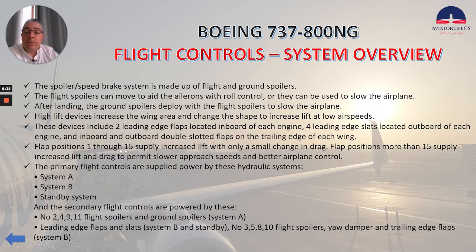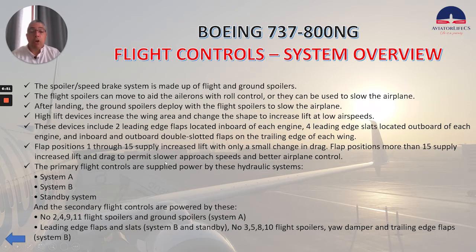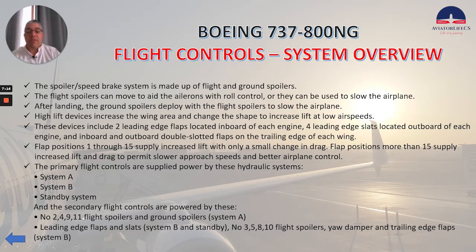Flap positions 1 through 15 supply increased lift with only a small change in drag. Flap positions more than 15 supply increased lift and drag to permit slower approach speeds and better airplane control. The primary flight controls are powered by system A, system B, and the standby system. The secondary flight controls: flight spoilers 2, 4, 9, 11 and ground spoilers by system A; leading-edge flaps and slats by system B and the standby system; flight spoilers 3, 5, 8, 10, yaw damper, and trailing edge flaps by system B.